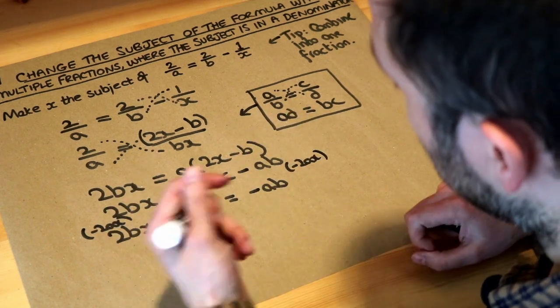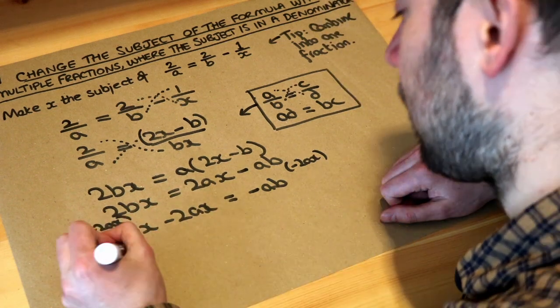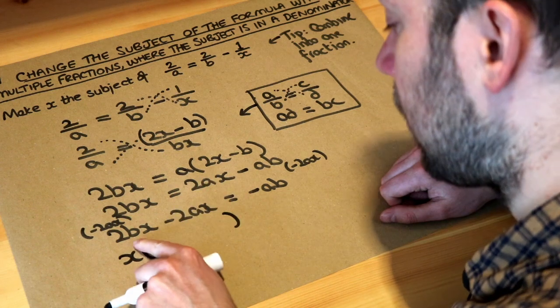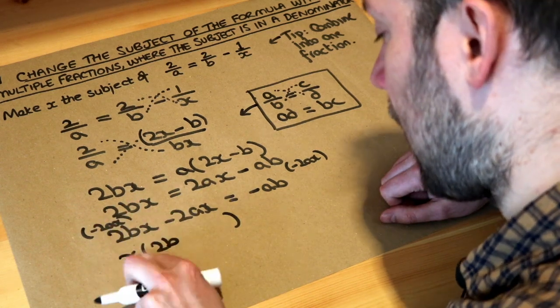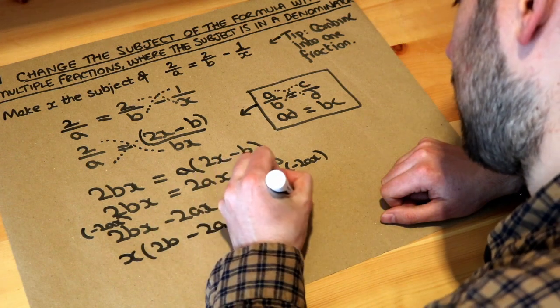And once we've done that, remember from a previous video, once we've got all the x terms on one side, we factorize out the x. So we've got x times 2b, and x times what gives you minus 2ax? Well it's minus 2a. We've still got that minus ab here.